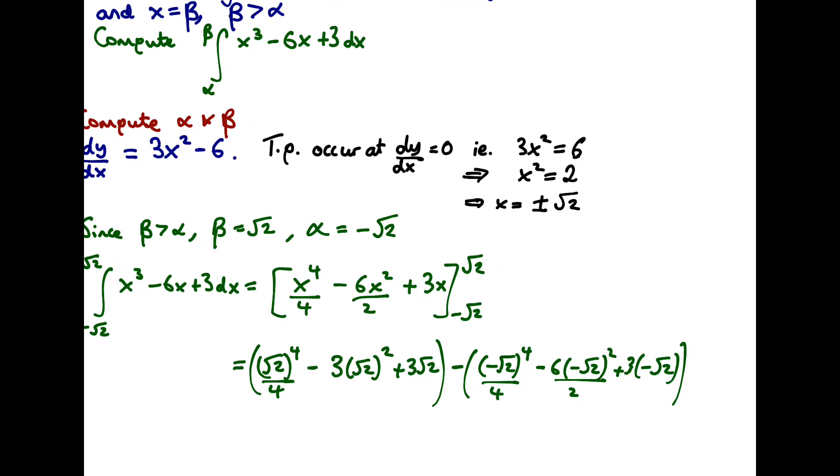What do we notice when trying to simplify this down? We notice that the even powers of root 2 will cancel, because when you put minus root 2 in here, this becomes a positive root 2 to the power of 4. So when you have this minus here, this term and this term will cancel, as well as this term and this term. So we're just left with these last two terms in each bracket.